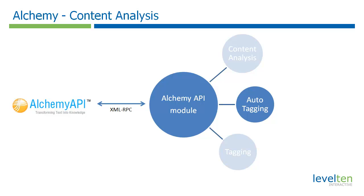The standard auto-tagging module has sub-modules for extracting from Yahoo Terms, Tag the Net, and Open Calais. Yahoo Terms extraction I generally find to not be that high quality. Tag the Net I'm not super familiar with and haven't gotten quite as tuned in as I like Alchemy. Open Calais is great but tends to be more focused around news. So what the Alchemy module does is add a fourth option that I find works better for general SEO and general content.